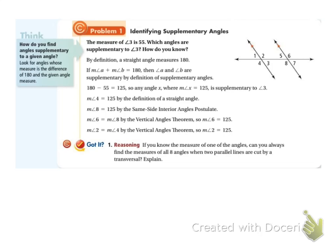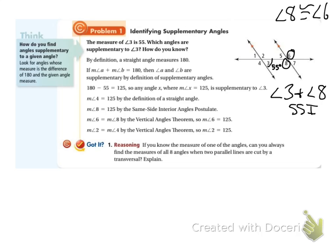If we are told that the measure of angle 3 is 55 degrees, we want to look at which angles add up to 180 degrees and why. We just looked at the same side interior angle postulate, so I know that angle 3 and angle 8 add up to 180 — that's same side interior angles. If I look at angle 6 and angle 8, those are vertical angles, so angle 8 is congruent to angle 6, meaning angle 3 and angle 6 also add up to 180. That's same side interior and vertical angles working together.